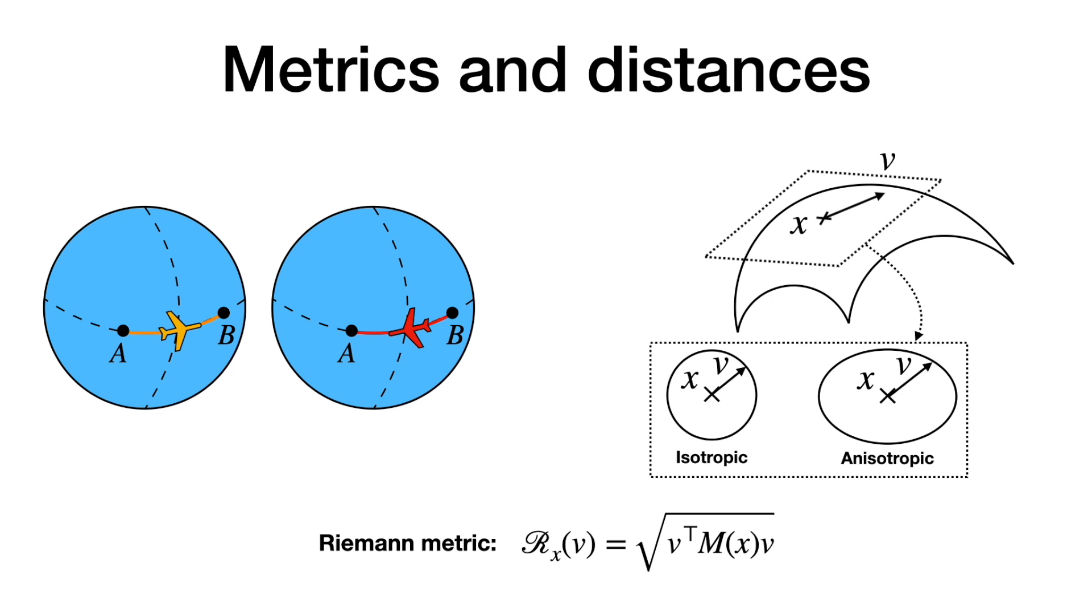Such metrics are commonly used in the field as Riemann metrics, which have a simple closed expression given by a quadratic form.